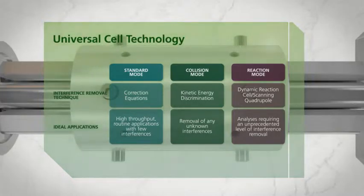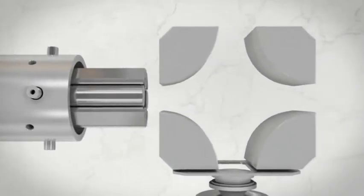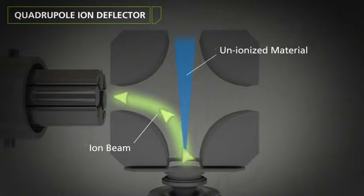The instrument has been engineered with a unique quadrupole ion deflector that turns the ion beam 90 degrees before it enters the universal cell and quadrupole mass filter, providing unparalleled stability and reducing background and interferences for the most accurate results.